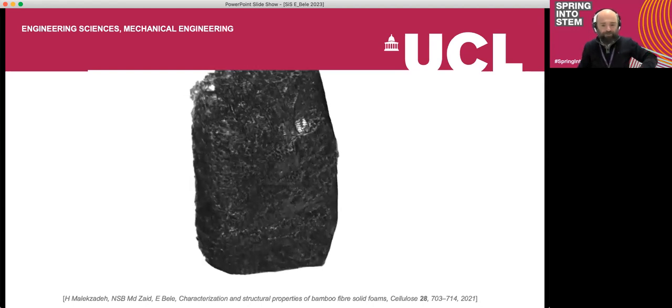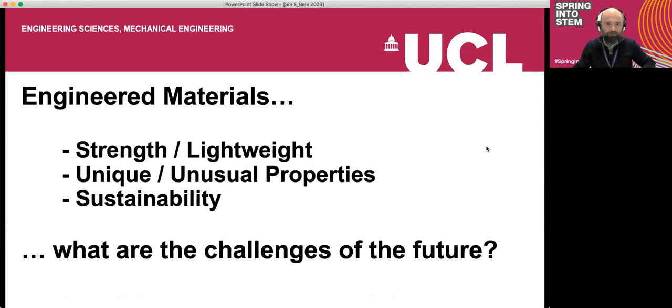Those were some examples. We talked about engineering materials for strength and lightweight, unique and unusual properties, and sustainability. These are three examples about taking a challenge of the present and answering it. But what is even more important and interesting is to predict what the challenges will be for the future and how we can think about what we can do now to meet these types of challenges.